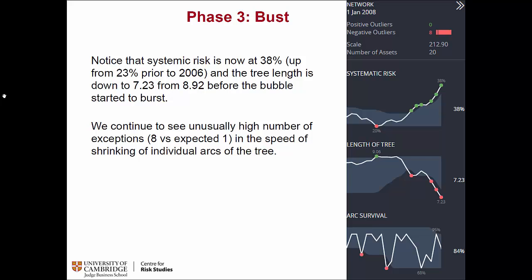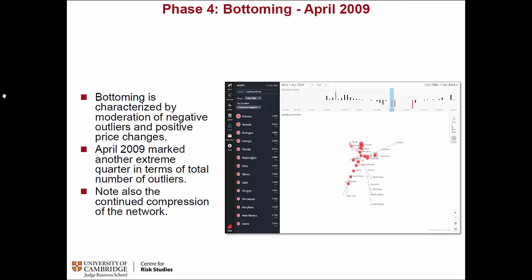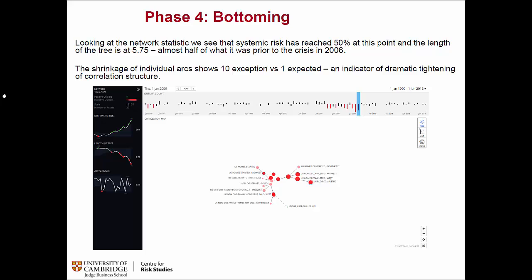Now we come to the bust point in 2008 where systemic risk has increased quite a bit — from 20% it's now at 38%. The tree length, which measures how highly correlated these things are, goes from 9 down to 7. The survival ratio shows structural changes in the correlation system — also increasing. The system is changing quite a lot. Then the bottoming in 2009 is where everything just plummeted. You see all these negative outliers across the states, and the network is really compressed — it's all behaving as one factor.